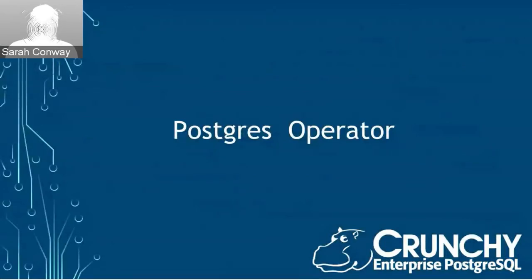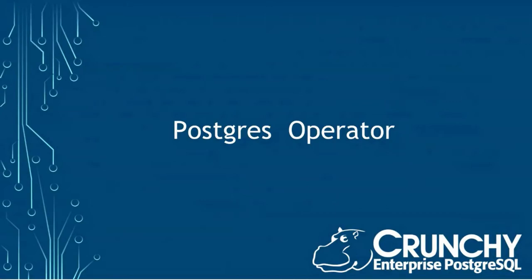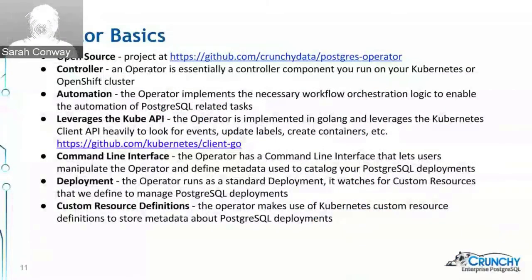We had a couple of customers who wanted to deploy over a thousand database applications and needed a way to manage them — that solution became the operator. The Postgres operator works directly with Kubernetes to provide operator capabilities for managing Postgres clusters within a Kubernetes or OpenShift environment, using a straightforward command line interface. The project also incorporates a REST API and REST client for interfacing with the operator. The code is on GitHub, it's completely open source, and it's easy to pull down, build, run examples, and experiment.